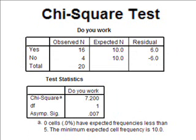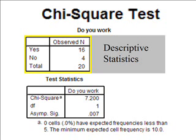Now we're looking at the chi-square SPSS output. The SPSS Basics book shows the step-by-step process to generate this output, but here we focus on interpreting it. There are two tables. The top table shows descriptive statistics — it describes the results for our sample. We can see that 16 people said they work and only 4 people said they do not work. Our null hypothesis expected a 50-50 split: 10 saying yes, 10 saying no. What we observed did not match the expected values.